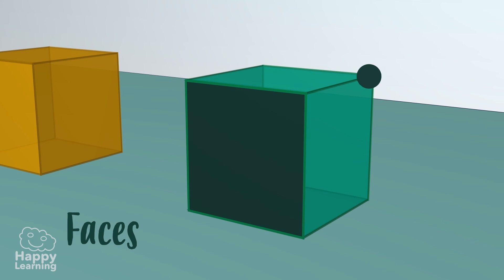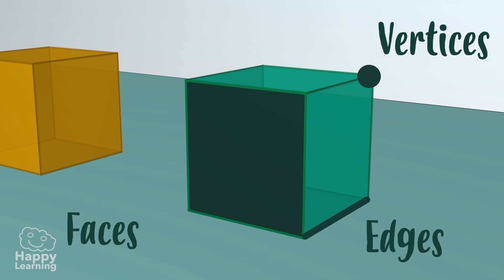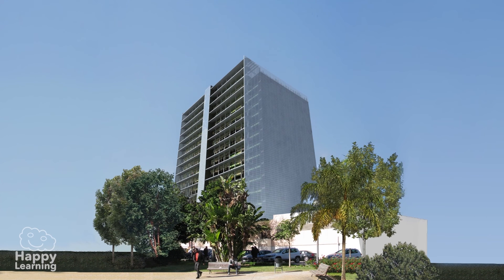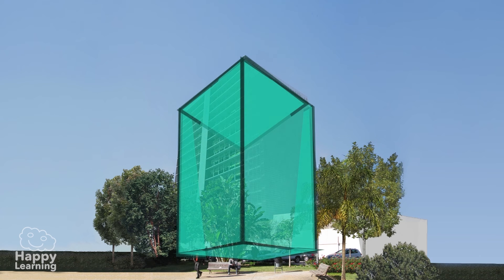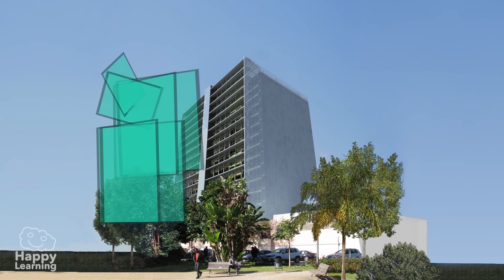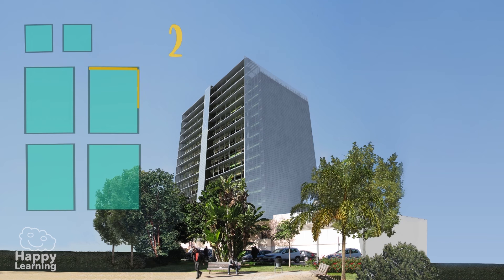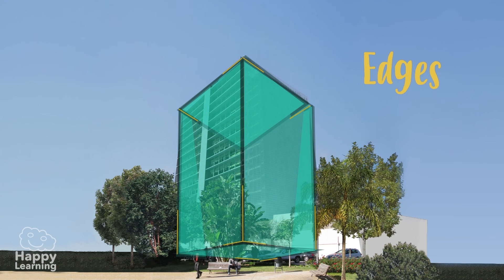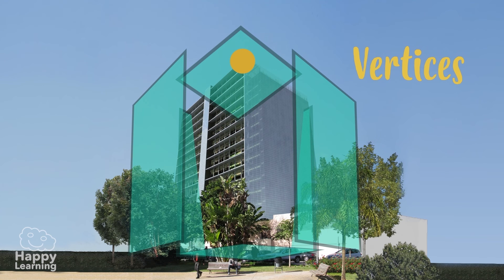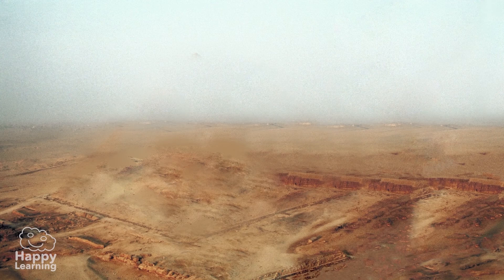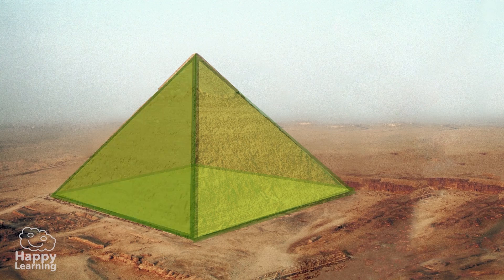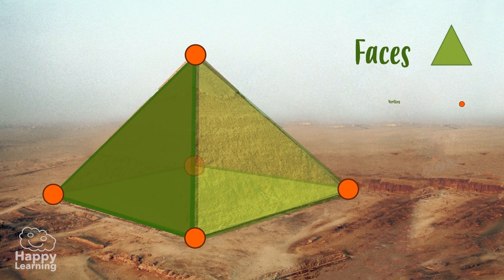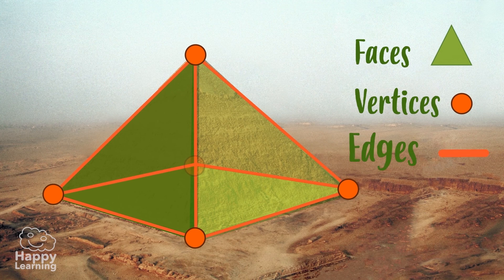Observe this building and we will discover the three elements. This building is a polyhedron formed by quadrilaterals, which are polygons with four sides. The faces are the polygons that make up the polyhedron. The edges are the sides of the faces. And the vertices are the points where three or more faces meet.